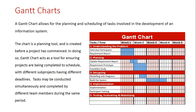The implementation stage will involve us actually implementing the information system into the workplace and then training the participants. These can overlap each other because we are installing it into the workplace where the participants are, and we can be showing them how it works, trialing it on a few machines.